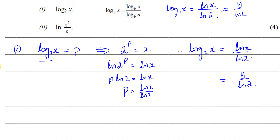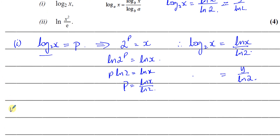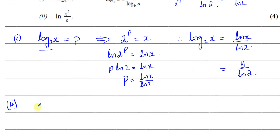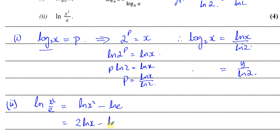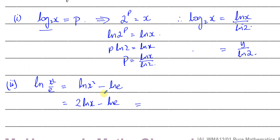Now part 2: express ln(x² / e) in terms of y. Using the laws of logarithms, we can split this using the division law: ln(x²) minus ln(e). Then ln(x²) can be expressed as 2·ln(x) using the power law, so we have 2·ln(x) minus ln(e). We know ln(x) equals y, so we replace it: 2y. And ln(e) equals 1, so the answer is 2y minus 1.